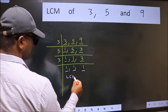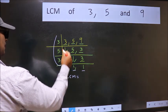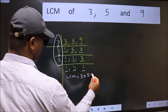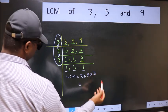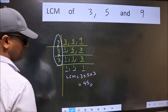So our LCM is, LCM is the product of these numbers that is 3 into 5 into 3. When we multiply these numbers, we get 45 is our LCM.